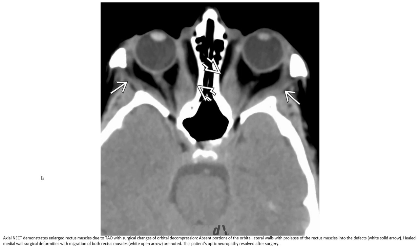This is also demonstrated on CT image, showing enlarged rectus muscles due to thyroid-associated orbitopathy, with surgical changes of orbital decompression. The absent portion of the orbital lateral wall is noted with prolapse of the rectus muscle into the sinus.